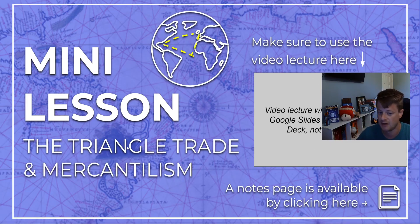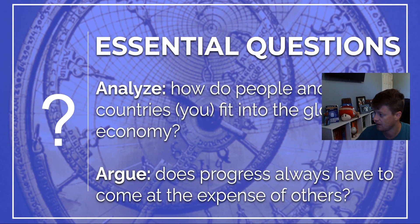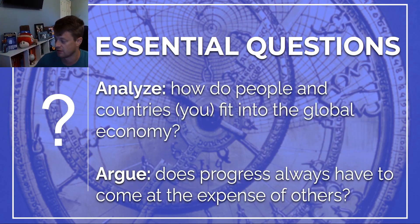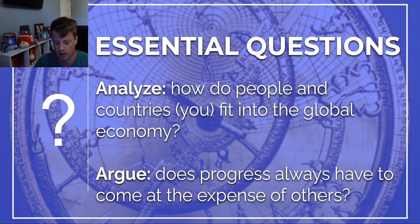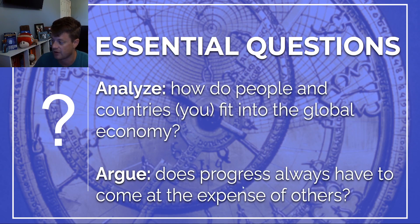So what is the triangular trade and what does it have to do with mercantilism? The bigger questions we're looking at here are: how do people and countries think about how the global economy works? We'll look at how that worldview was set up in the 1700s and then look at this idea of progress coming at the expense of others — because that is going to be a running theme. There are very key thoughts that certain countries and philosophical thinkers had about how the world should operate at this time.